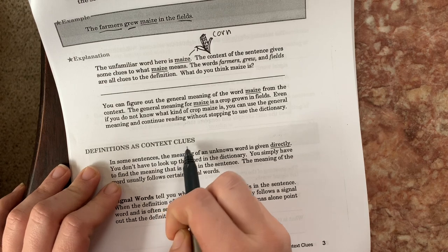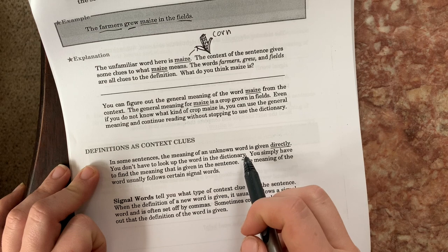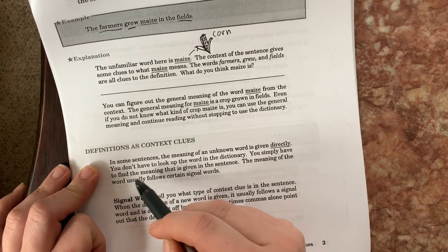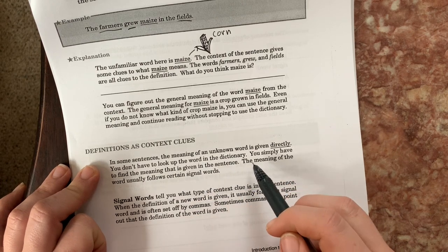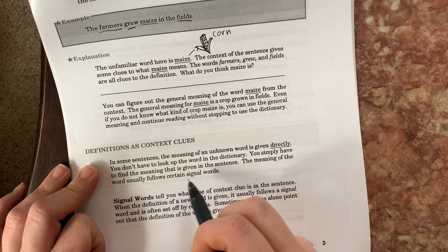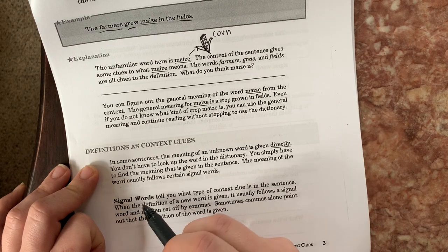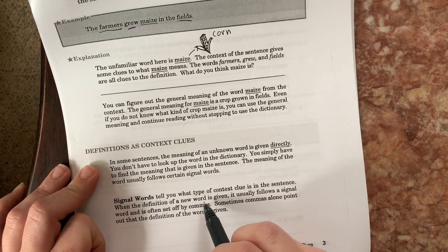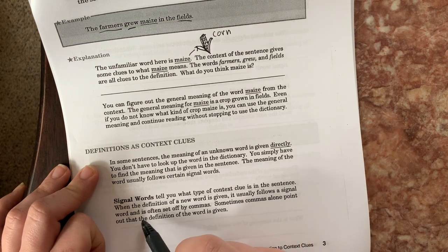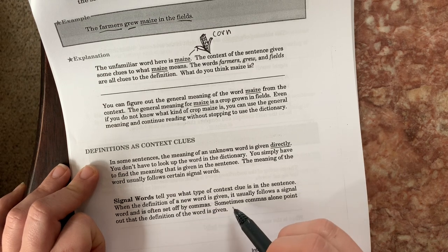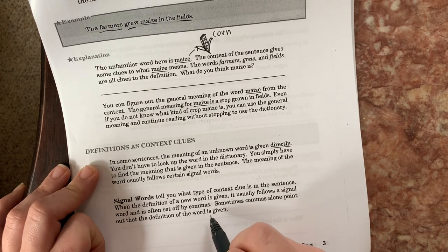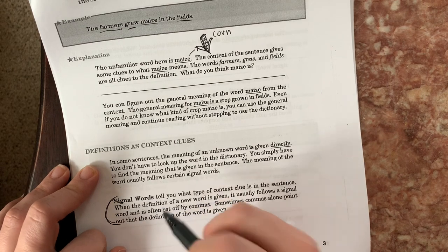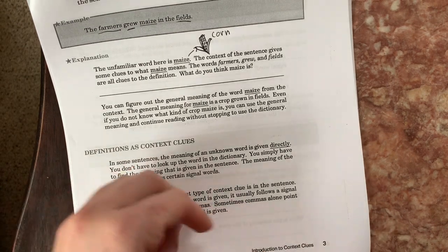Definitions as context clues. In some sentences, the meaning of an unknown word is given directly. You don't have to look up the word in the dictionary. You simply have to find the meaning that is given in the sentence. The meaning of the word usually follows certain signal words. Signal words tell you what type of context clue is in the sentence. When the definition of a new word is given, it usually follows a signal word and that is often set off by commas. Sometimes commas alone point out that the definition of the word is given. This paragraph right here, it seems really important. Not only does it have a bolded section for signal words, but it's telling us something that we'll have to remember during the rest of this lesson. So I think I need to write this down.